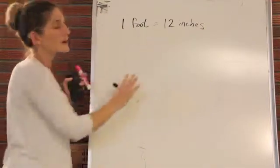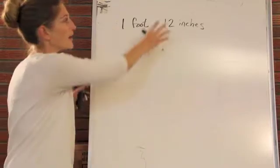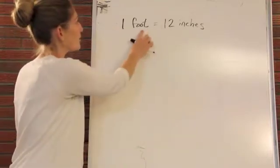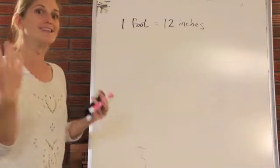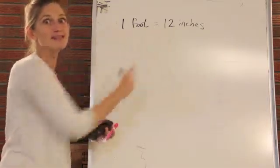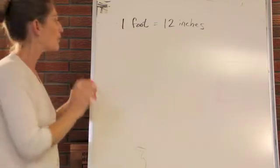Now when we set up our calculations, we can actually multiply whatever value we have by a unit conversion because if we take one foot and we divide it by 12 inches, anything divided by itself, these are the same distances, it's equal to one. So we're not actually changing the value of what we're looking at.